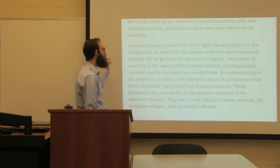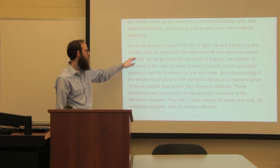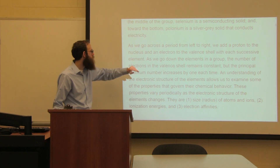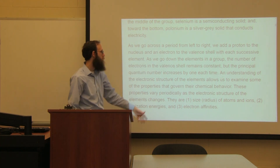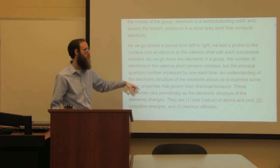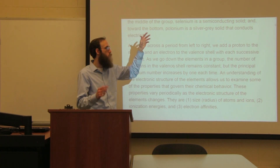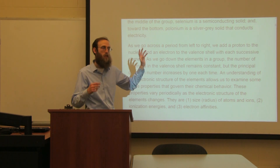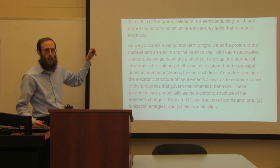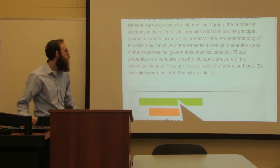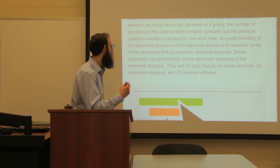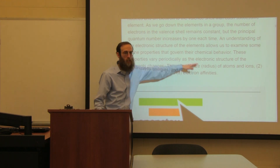As we go across from left to right, we're adding protons to the nucleus and an electron to the valence shell. The number of electrons in the valence shell remain constant as we go down the elements in a group, but the principal quantum number increases. Hydrogen has 1s1, the valence electron for lithium is 2s1, for sodium it's 3s1. That principal quantum number is increasing by 1 each time. Knowing the electronic structure and understanding what that means allows us to examine the properties that govern chemical behavior.